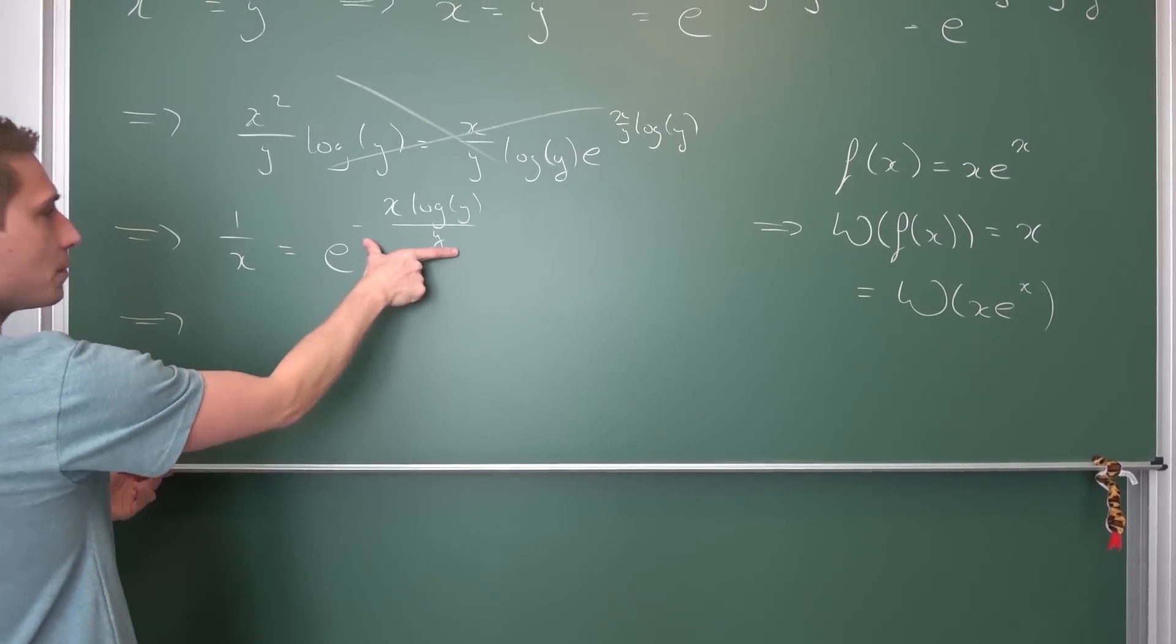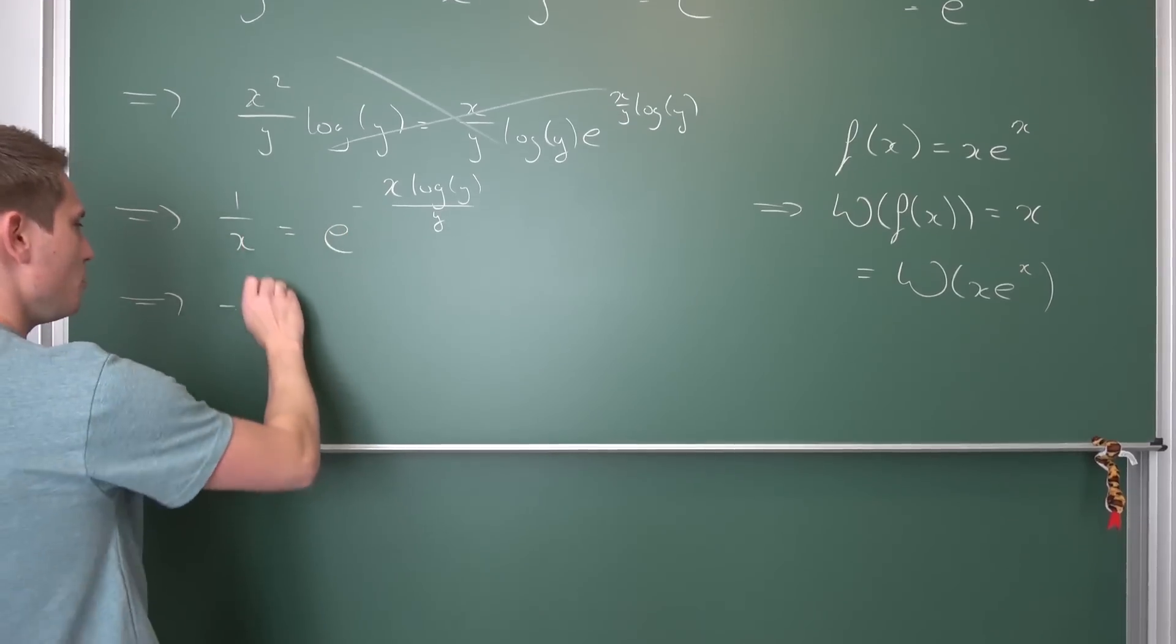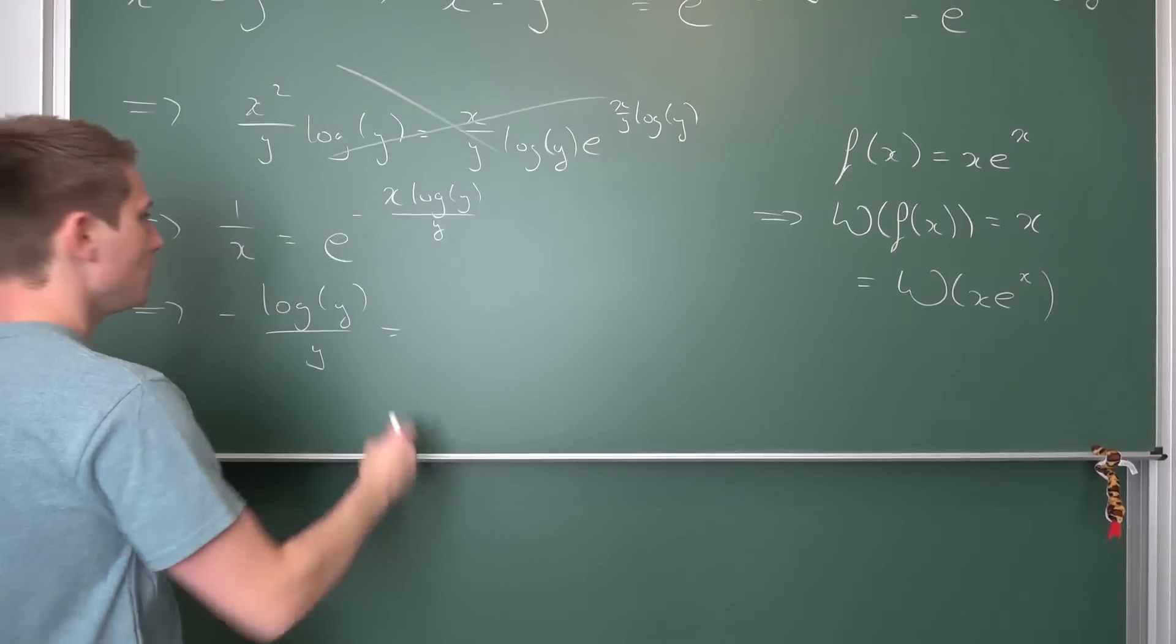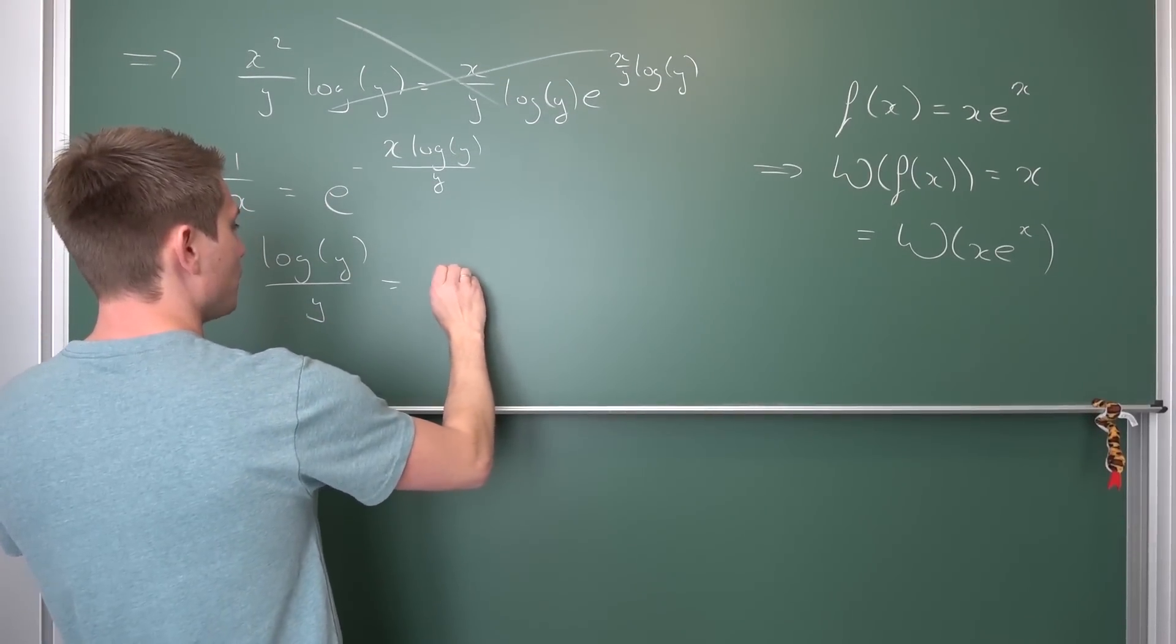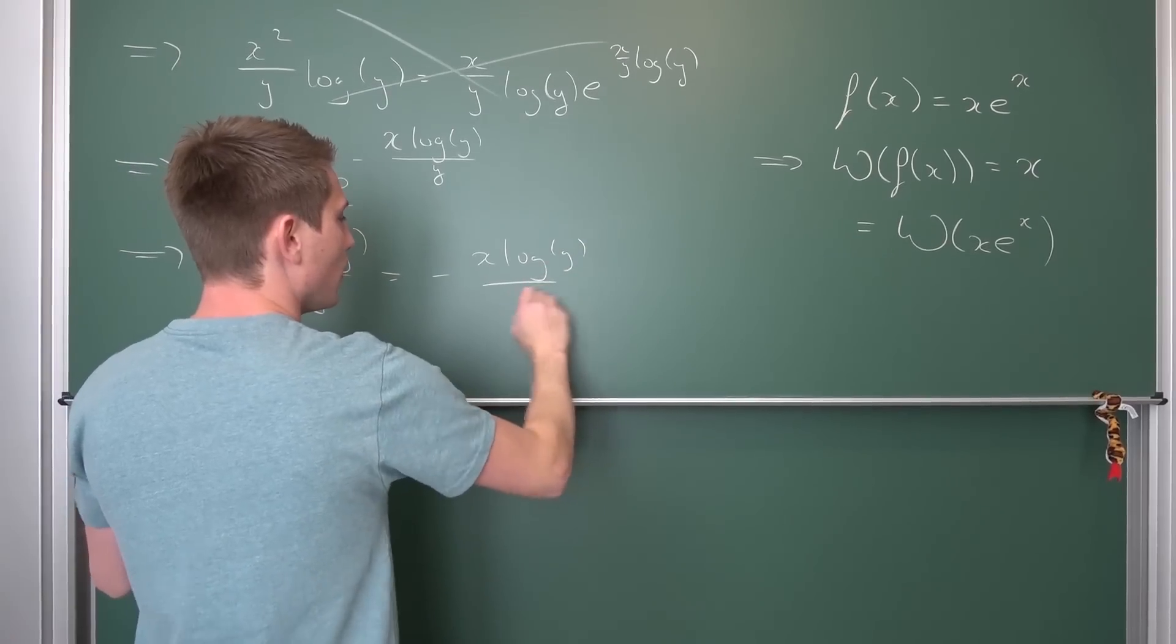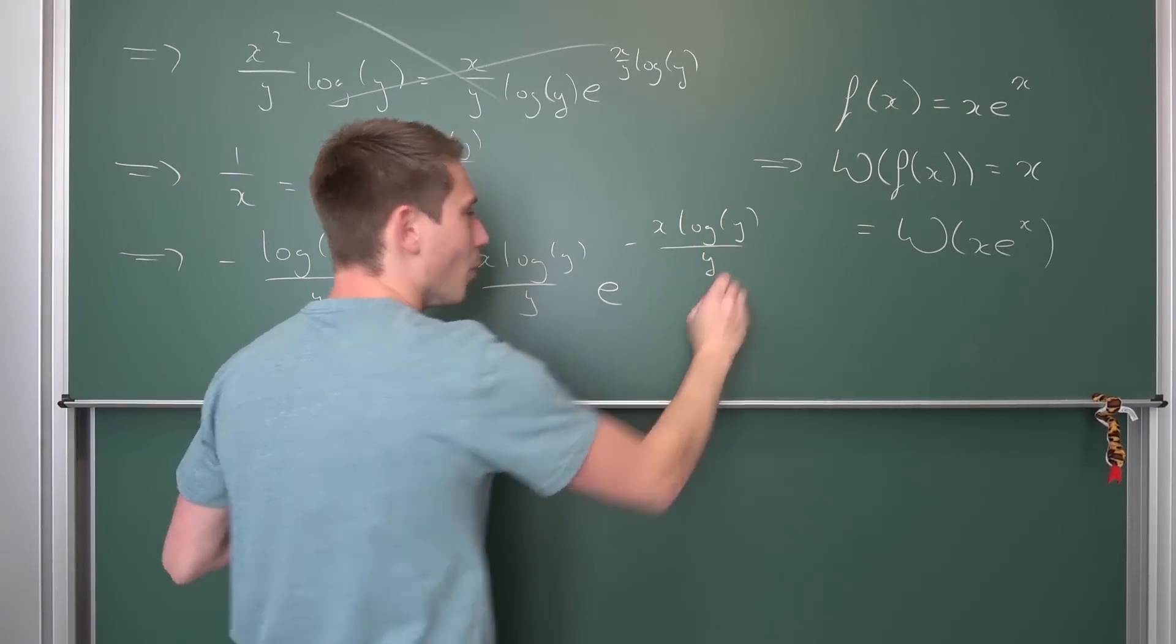Now, if we multiply both sides by this exponent, we are going to get negative x over x is going to cancel out. So, negative natural log of y over y being equal to this chunk times e to this chunk. So, negative x log of y over y times e to the negative x log of y over y.